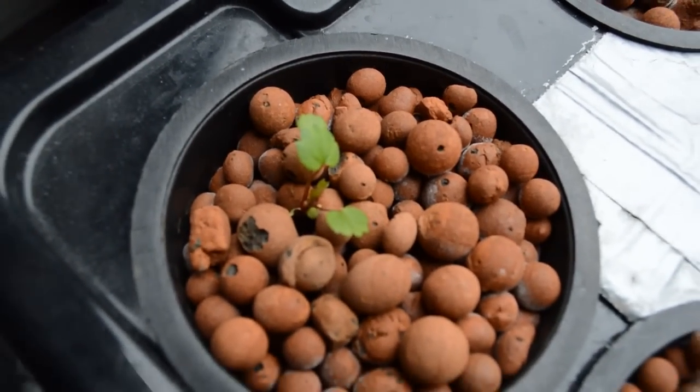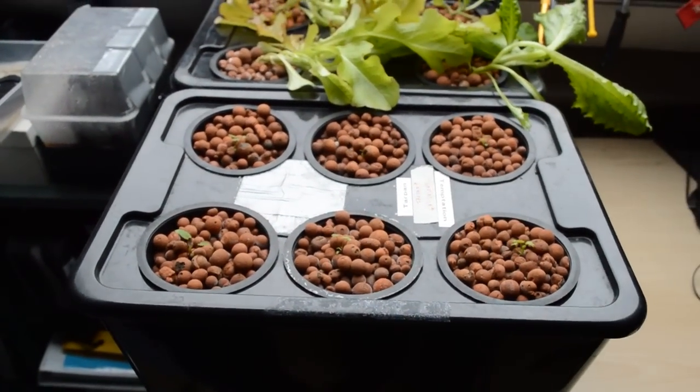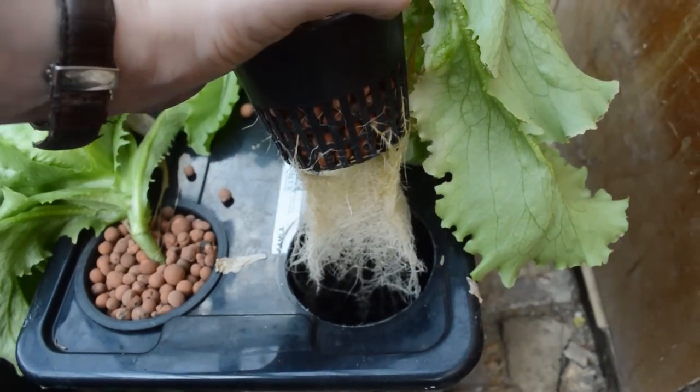Once you have set up your Kratky system, all you have to do is place it in a sunny spot or under a grow lamp and wait. After a couple of weeks, your homegrown vegetables should be ready for harvest.